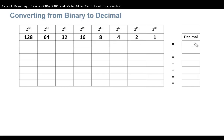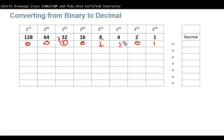To convert binary to decimal, add the positional values wherever there is a 1 and ignore zeros. For example, take 00101101. Ignore the zeros; this bit represents 32, this one represents 8 — that's 40 — this one represents 4, that's 44, and this one represents 1, giving us 45. So 00101101 in binary equals 45 in decimal.